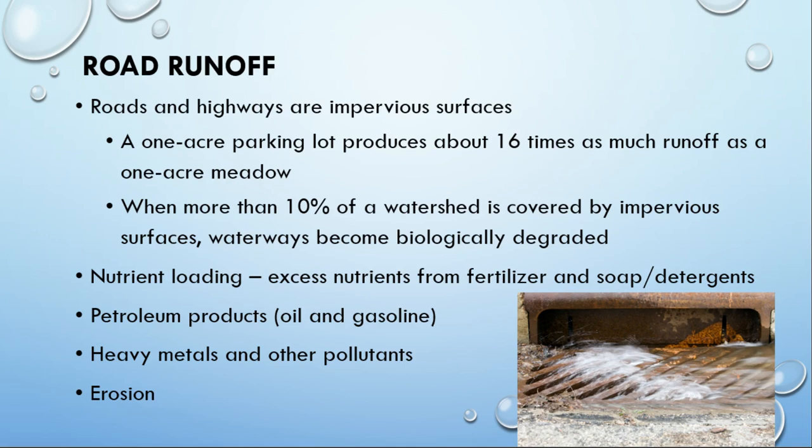When you have more than 10% of a watershed covered by impervious surfaces, you're picking up lots and lots of pollutants going directly into the waterways. This is where you start having high levels of water pollution — you get things like nutrient loading, oil and gasoline from the road, and anything else that might have gone into the street.